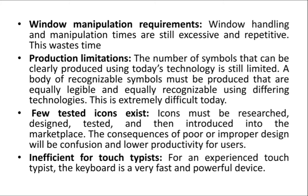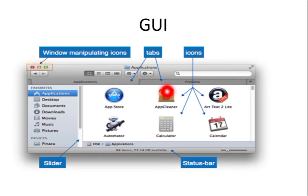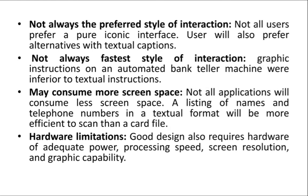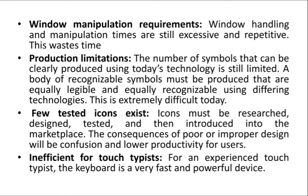Another disadvantage is production limitations. The number of symbols that can be clearly produced using today's technology is still limited. You can't use different types of symbols for each and every task. Even today, the types of icons available in GUI are limited — you can only produce icons for important tasks with the available technology, and that is another disadvantage.